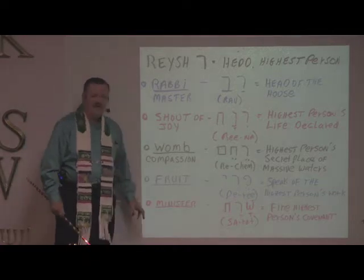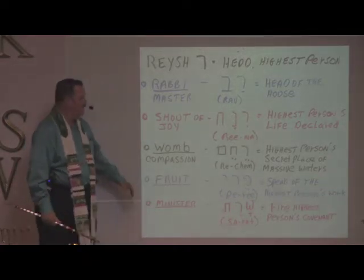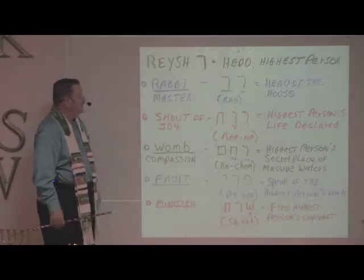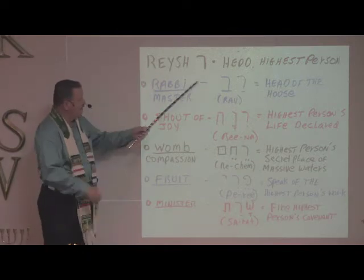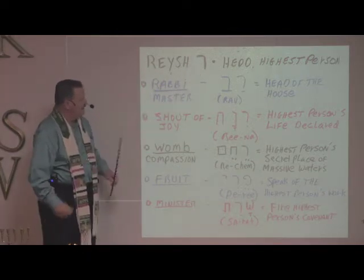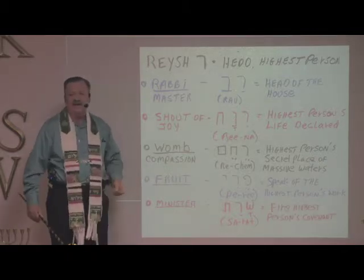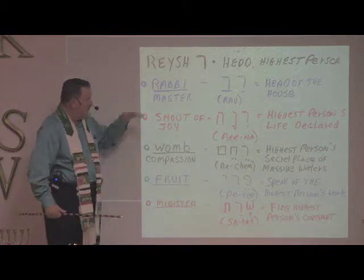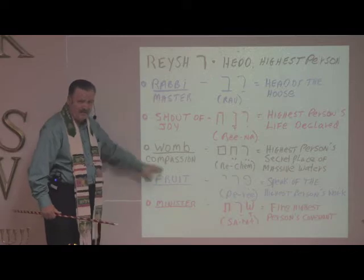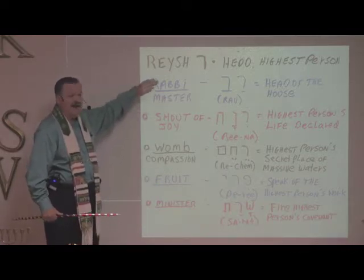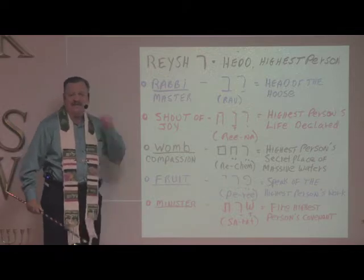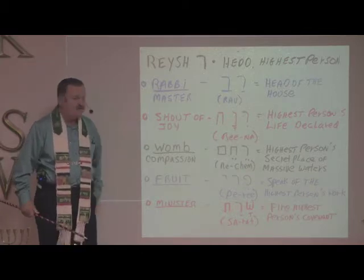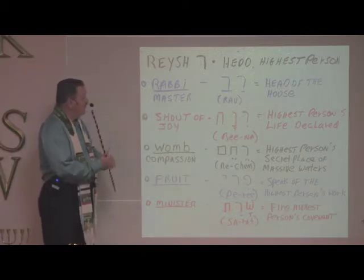Welcome to the Book of Acts Now Global Church and School. We're glad you're tuned in with us today. We're excited to continue our study in the 22 letters of the Hebrew alphabet. Today we're looking at Resh, which makes this form here and means 'head' or 'highest person.' We're going to look at some biblical words to see how Resh is used as part of the building blocks of the Word of God. You can reference hebrewforchristians.com for the alphabet.